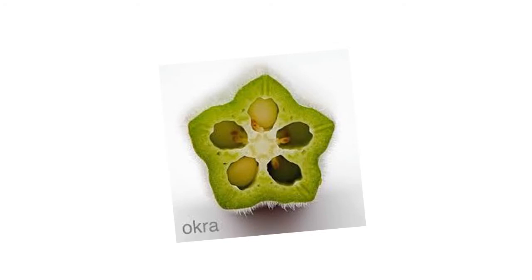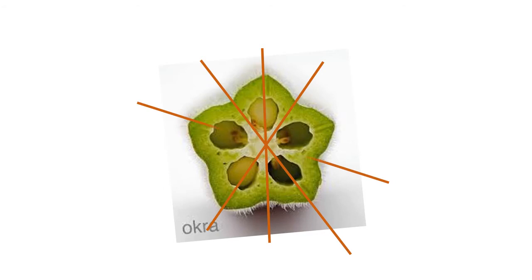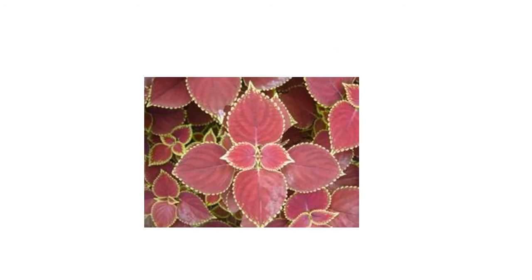The next is a sliced lady's finger. Here we can get up to five lines through which we can divide it into two equal parts. The first line is this, the second line is this, the third line is this, the fourth line is this, and the fifth line is this. Each of these five lines helps us get two equal, identical, and similar parts of the lady's finger.